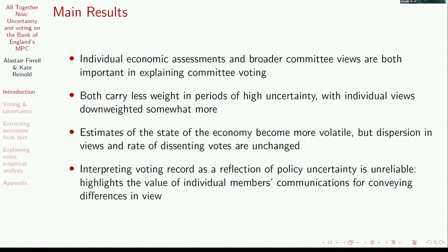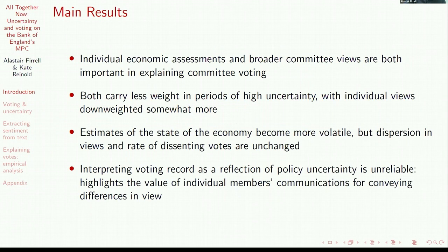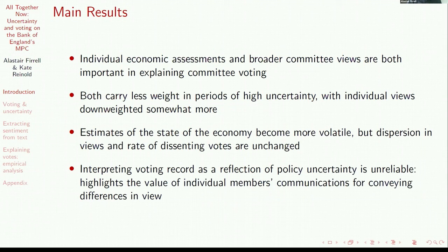The key results: both individual economic assessments and broader committee views are important in explaining committee voting, but during times of high uncertainty both carry less weight — they are down-weighted compared to other factors, with individual views down-weighted even more. So members are less likely to push their own view over others. Under high uncertainty, while estimates of the state of the economy become more volatile, dispersion in those views does not increase, meaning the rate of dissenting votes does not change.